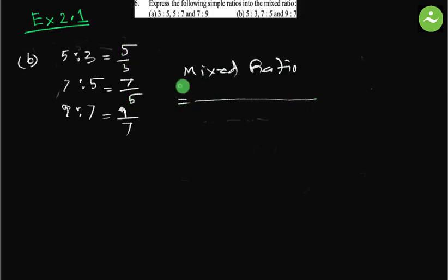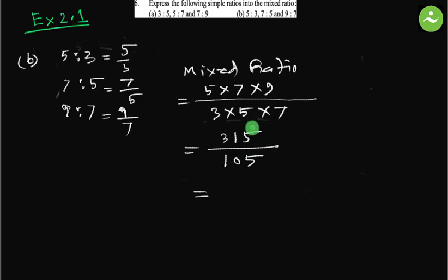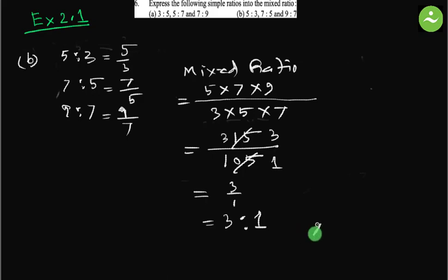Mixed ratio equals to product of numerators 5 into 7 into 9, divided by product of denominators 3, 5, and 7. 5 into 7 is 35, multiply by 9 is 315. 3 into 5 is 15, multiply 7 is 105. If we divide both by 105, this becomes 3 and this becomes 1. So 3 by 1, equals to 3 is to 1. That is the mixed ratio and that is the answer.